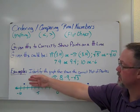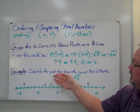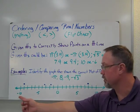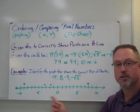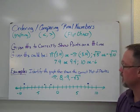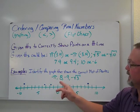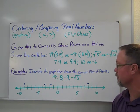So the example that they would give you is identify the graph that shows the correct plot of points. So they're going to either give you a number line or you may just want to draw one out and get that done. So the numbers that they're going to give you in this example are negative pi, 8, negative 9, negative square root of 3.